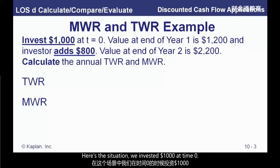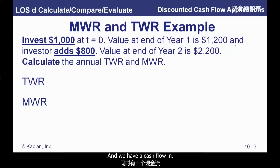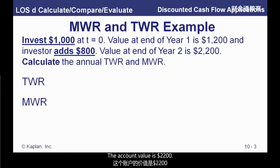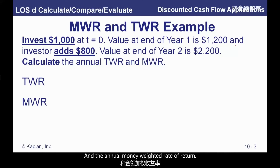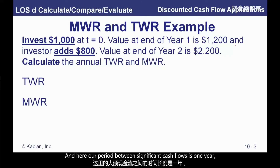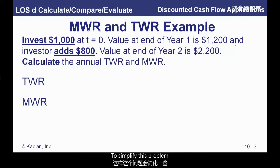Let's compare the two. Here's the situation: we invest $1,000 at time zero. At the end of year one, the value grows to $1,200, and we have a cash flow in — we add $800. At the end of year two, the account value is $2,200. We're going to use these figures to calculate both the annual time-weighted return and the annual money-weighted rate of return. Our period for significant cash flows here is one year, which simplifies the problem.